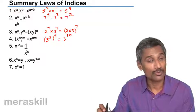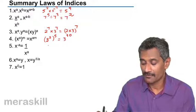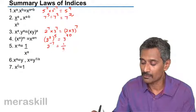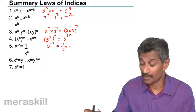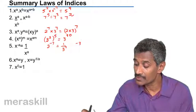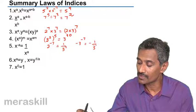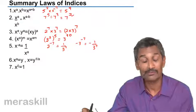x raised to minus a is one upon x raised to a. Say for example, three raised to minus seven can be written as one upon three raised to seven. Now what would be minus three raised to minus seven? It's going to be minus one upon three raised to seven. So there has to be a minus in front of it, then it becomes a negative number.